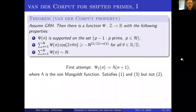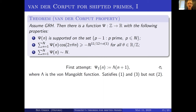Does the von Mangoldt function work? It does satisfy the first property — supported on shifted primes, essentially. You might object that von Mangoldt is also supported on prime powers, not just primes, but let's ignore that. It has the correct normalization — that's the prime number theorem. But it does not satisfy the second property.